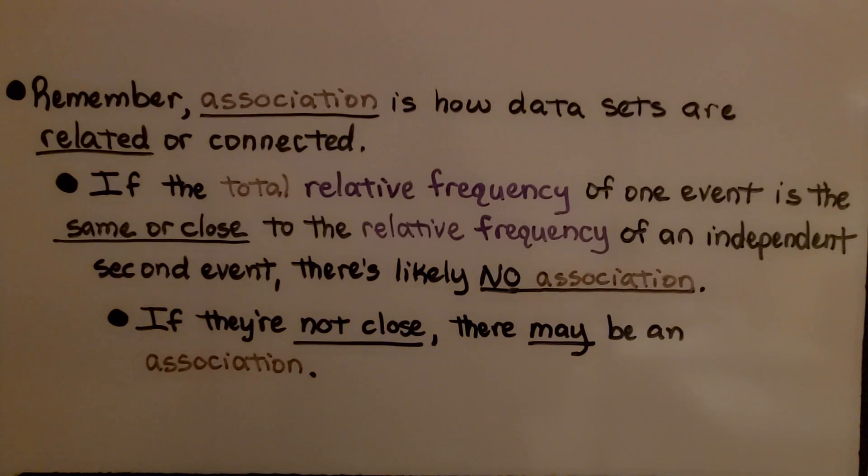Now remember, association is how datasets are related or connected. If the total relative frequency of one event is the same or close to the relative frequency of an independent second event, there's likely no association. If they're not close, there may be an association.